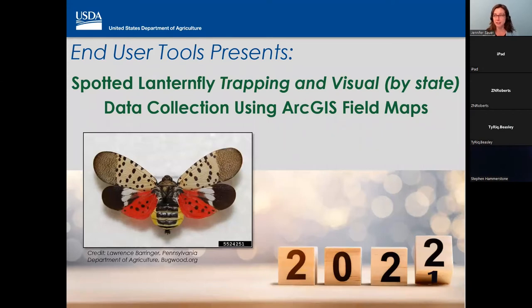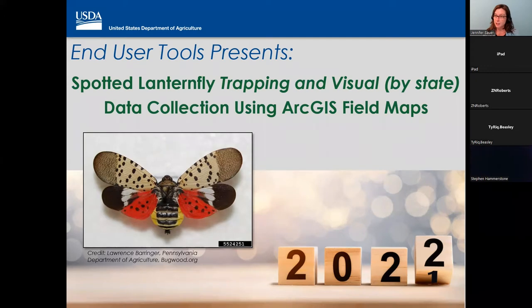What a title — but it does cover everything we're going to talk about today. Spotted Lanternfly has just released a much anticipated and a little bit delayed SLF trapping and visual surveys by state map. What this means by state is your state has its own map shared to a group with your state's name, so you will only have access to view and record data pertaining to your state.